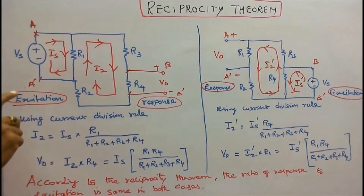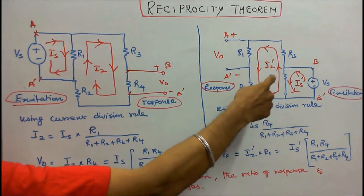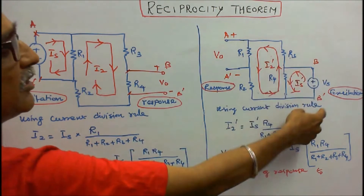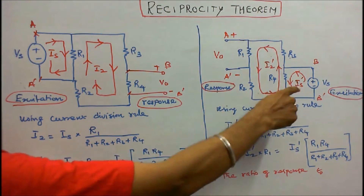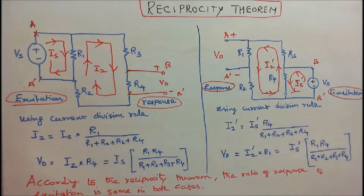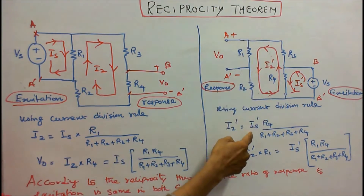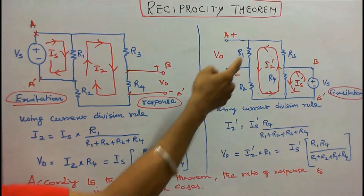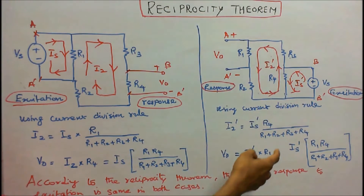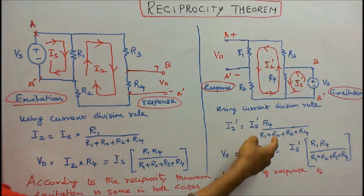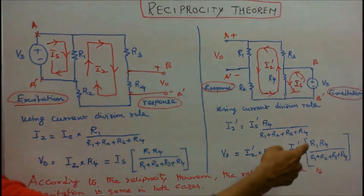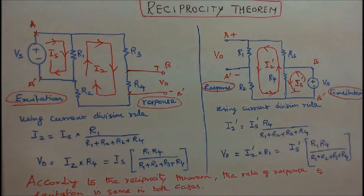Next, I interchange the source — connecting it across R4 — and I want to find the response at R1, that is the voltage across R1. The loop currents are now IS dash and I2 dash. Using the current division rule, I2 dash is equal to IS dash into R4 divided by R1 plus R2 plus R3 plus R4. Therefore, V0 is equal to I2 dash into R1. According to the Reciprocity Theorem, the ratio of response to excitation is the same in both cases.